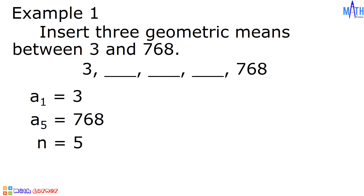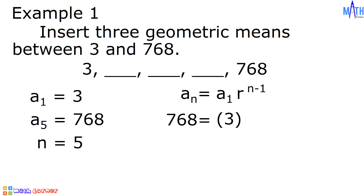Let us solve for the common ratio. We will be using this formula in solving for the common ratio. Let us substitute all the given values to this formula. a sub n becomes a sub 5, and a sub 5 is equal to 768. a sub 1 is equal to 3, r raised to n minus 1, or 5 minus 1. Let us simplify: 5 minus 1 is equal to 4. We need to isolate r raised to 4 to one side by dividing both sides by 3. 768 divided by 3 is equal to 256.